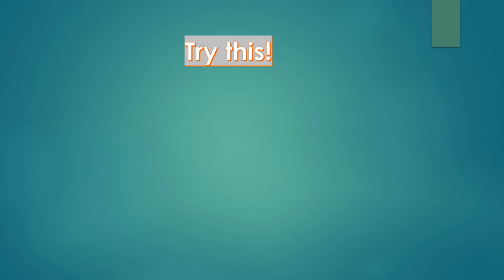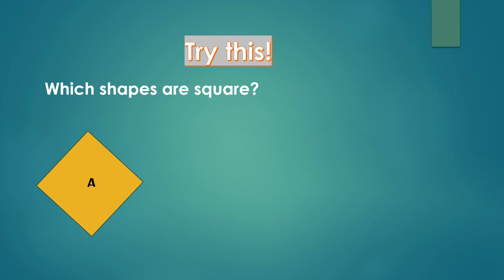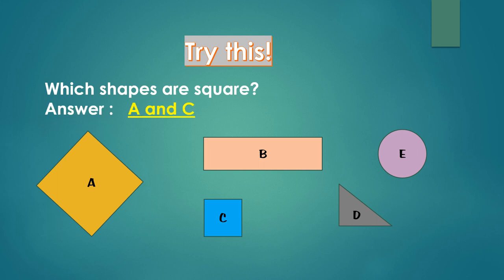Okay, kids. Let's try this question. Which shapes are square? A, B, C, D, or E? I give you 30 seconds. Yes, you are correct. The answer is A and C. A is a square.